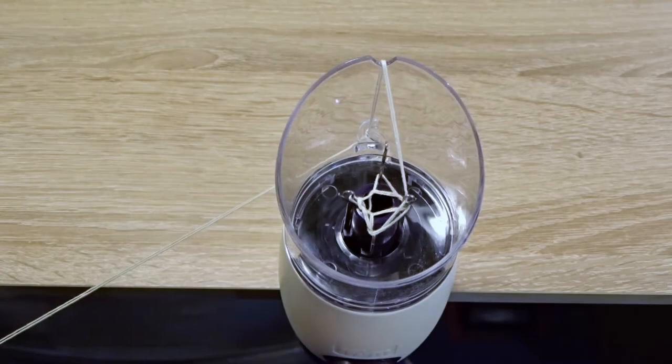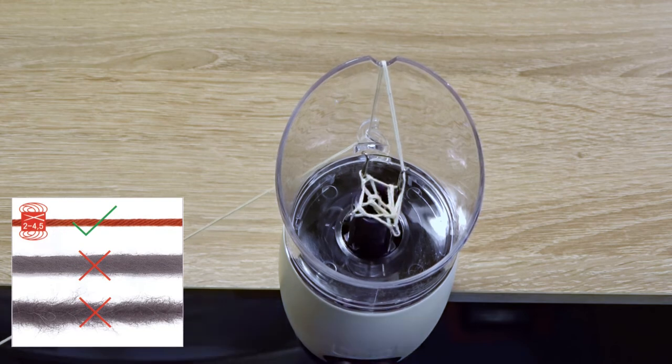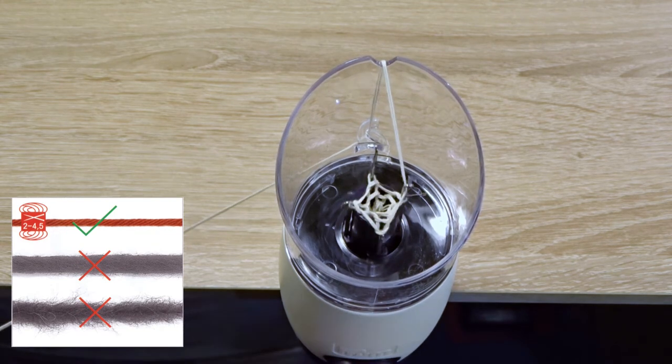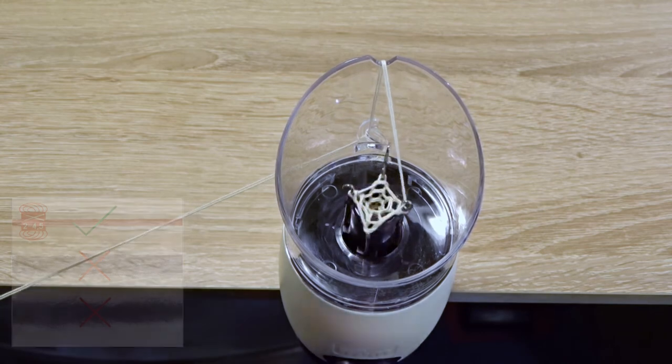Too thick or fuzzy yarn can damage the mill. You have to be able to rotate the handle easily. Now I am using two strands of fine cotton yarn.